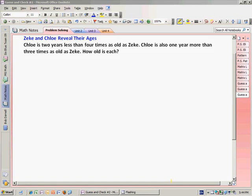Our problem solving method this time is guess and check, and the problem we're going to be looking at is Zeke and Chloe reveal their ages. Chloe is two years less than four times as old as Zeke. Chloe is also one year more than three times as old as Zeke. How old is each?